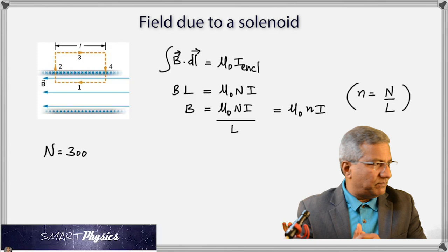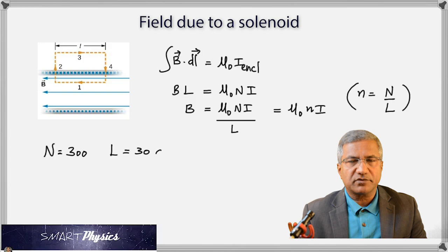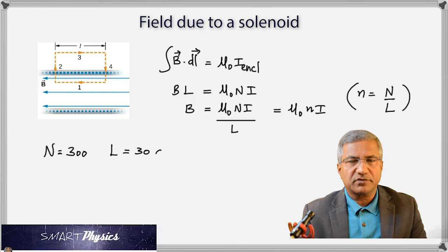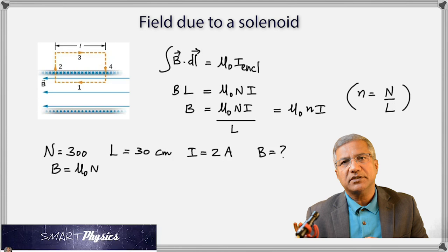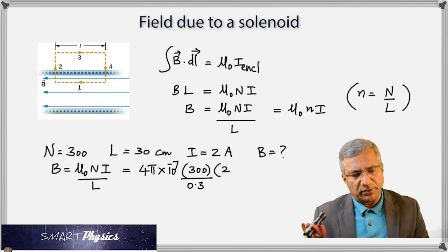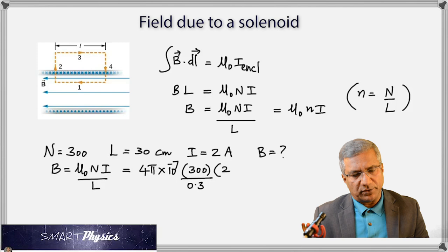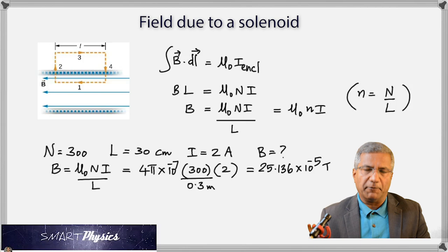Here is an example: N = 300 turns in 30 centimeters, current = 2 amperes. The formula is B = μ₀NI/L, where L must be in meters. So B = (4π×10⁻⁷ × 300 × 2)/0.3 = 25.136×10⁻⁵ tesla. That's how we calculate the magnetic field on the axis of a solenoid using Ampere's law.